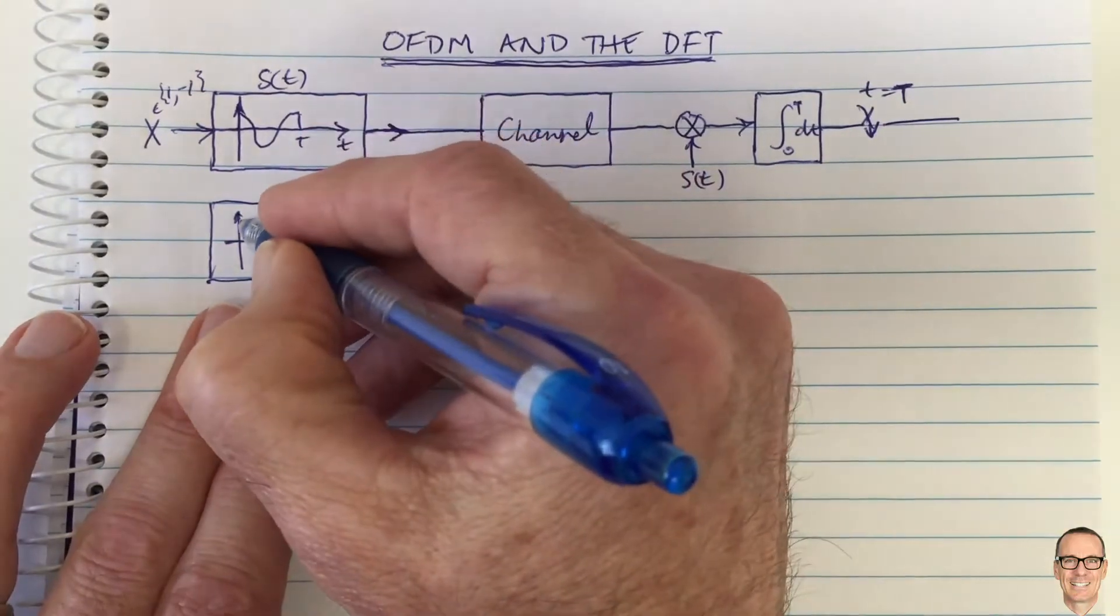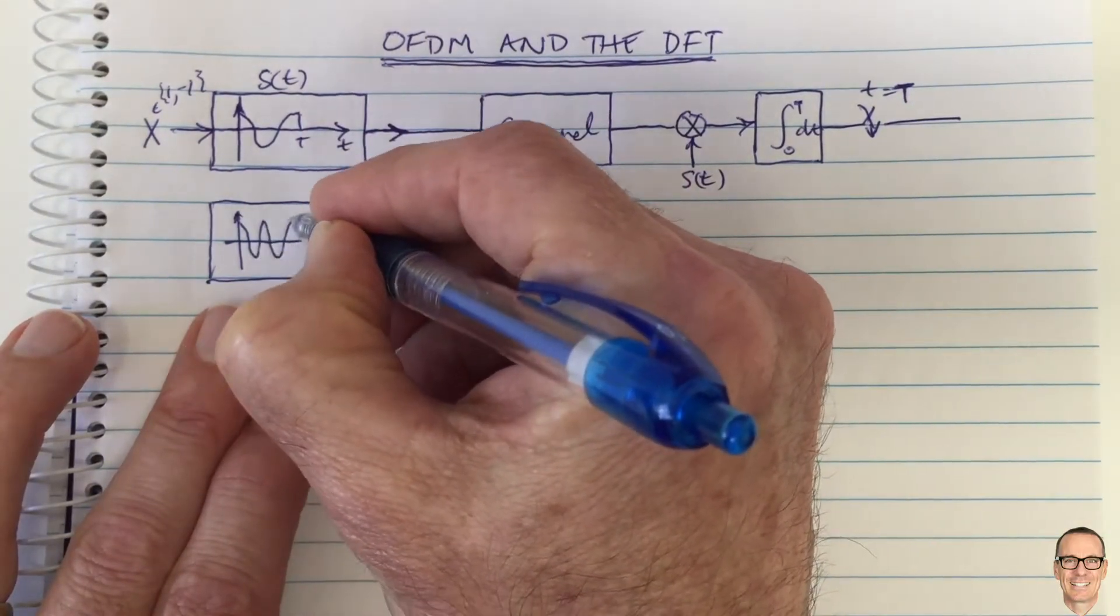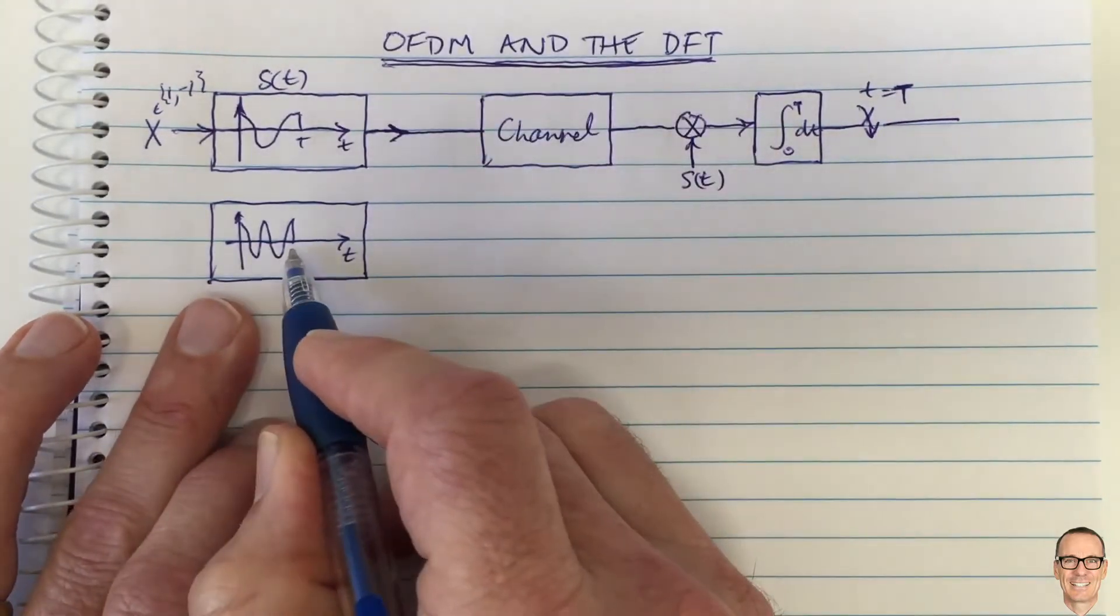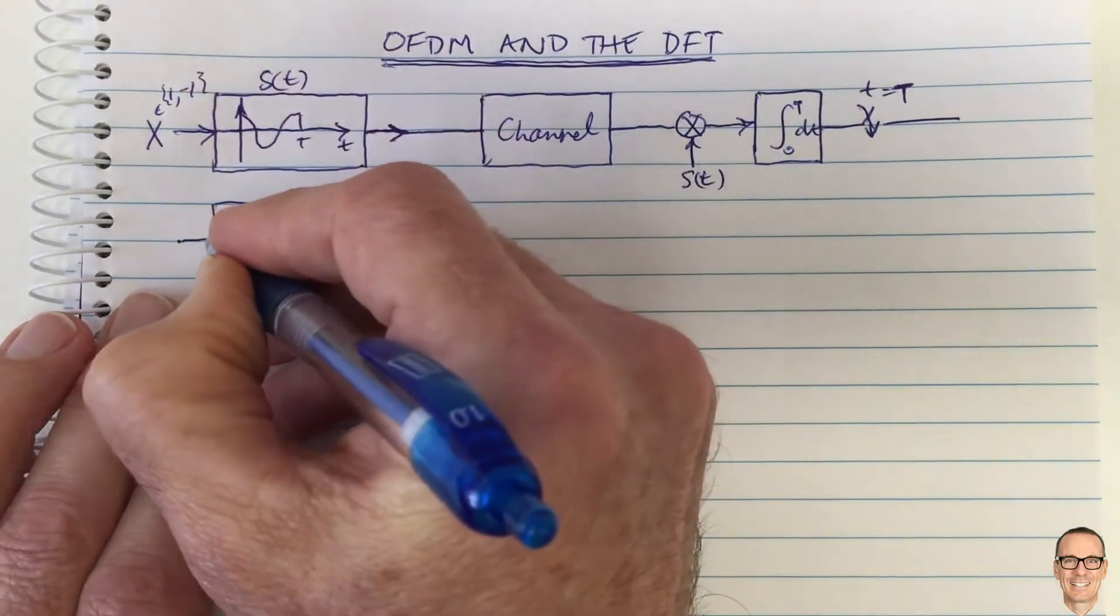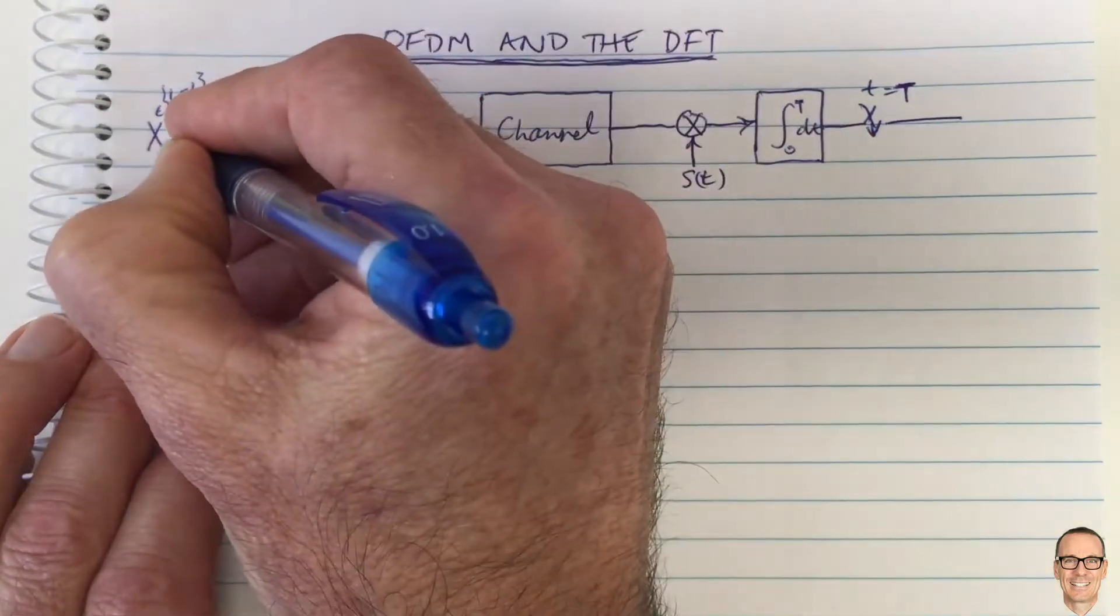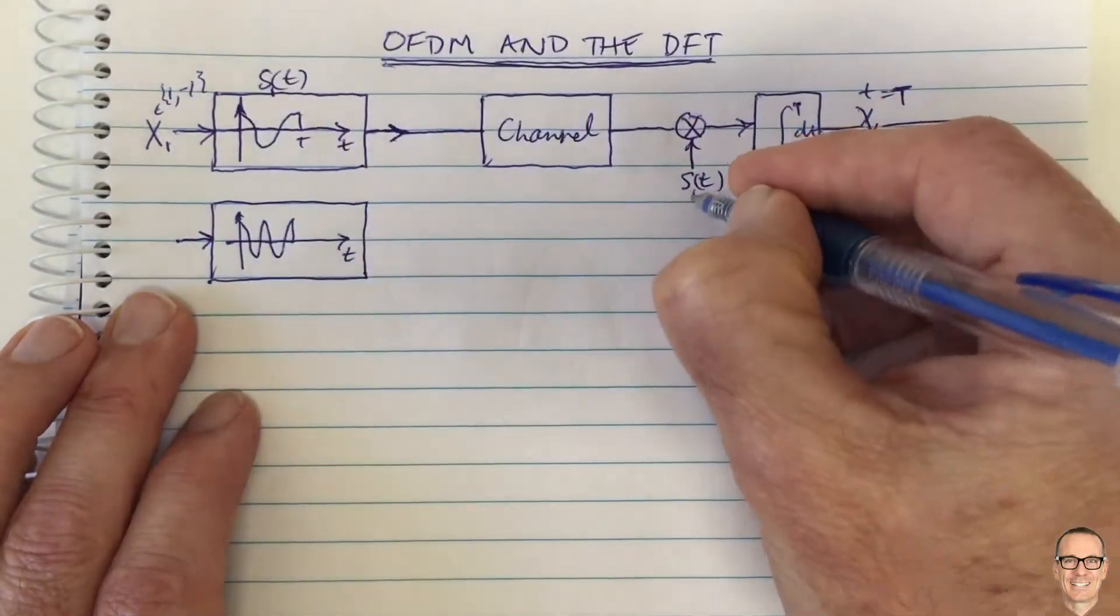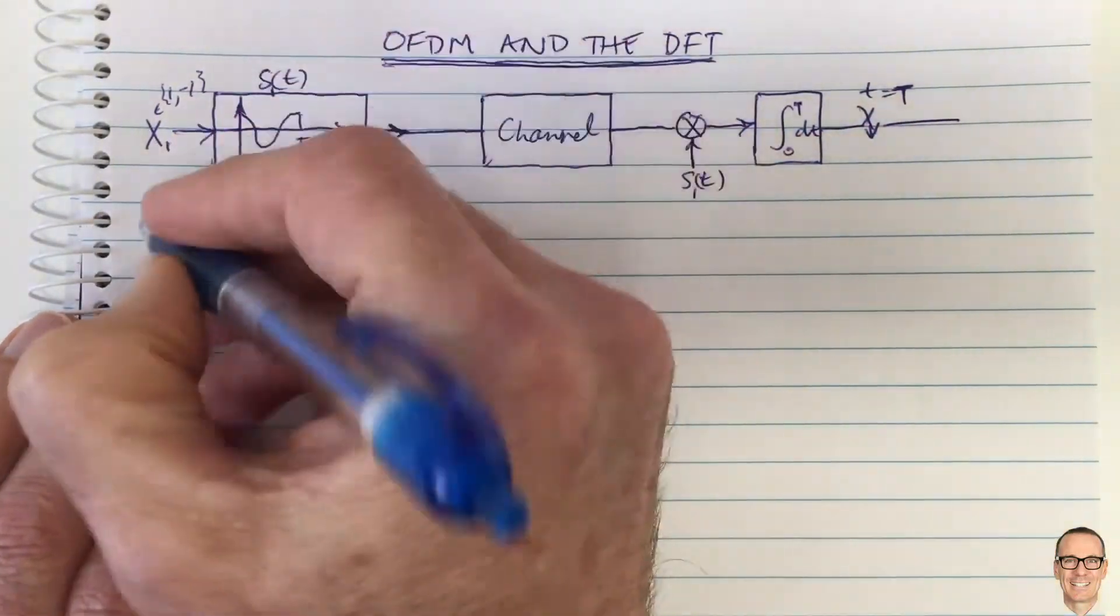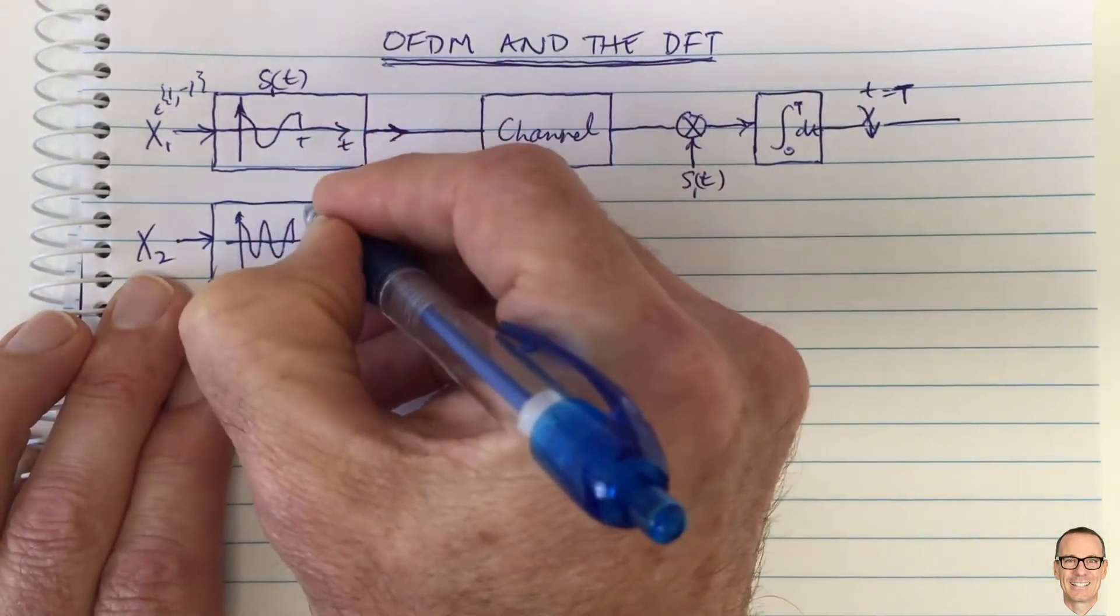You can find the link in the description below and also at the end of this video. If we pick this one, for example, at twice that frequency, then it's going to be orthogonal. Let's call this channel one, signal one. This is x2, the second channel, this is the second signal s2(t).